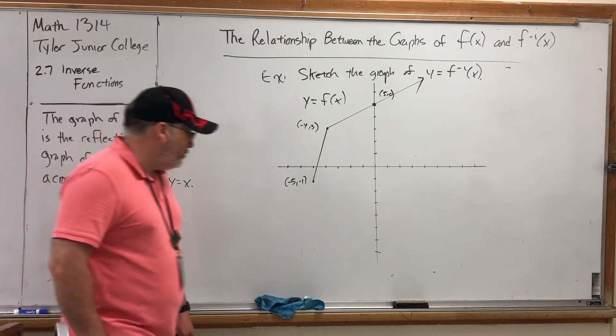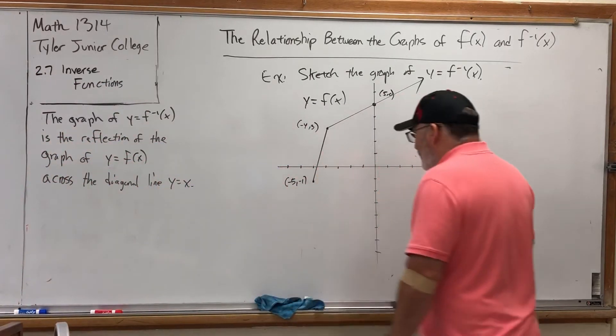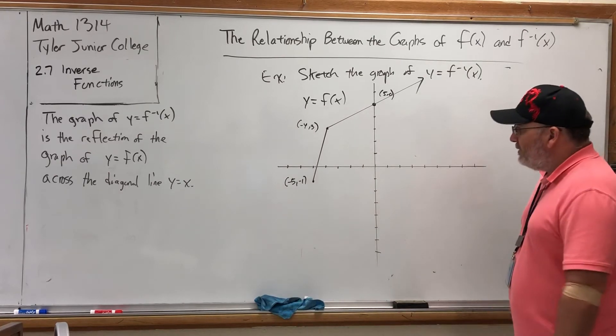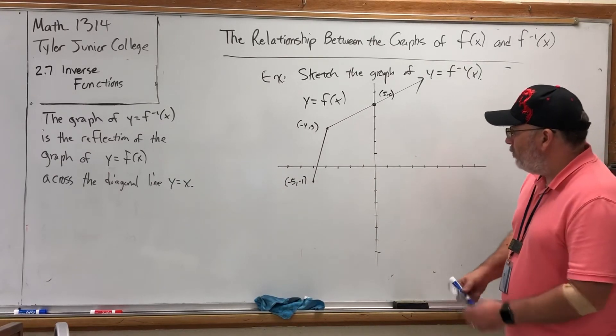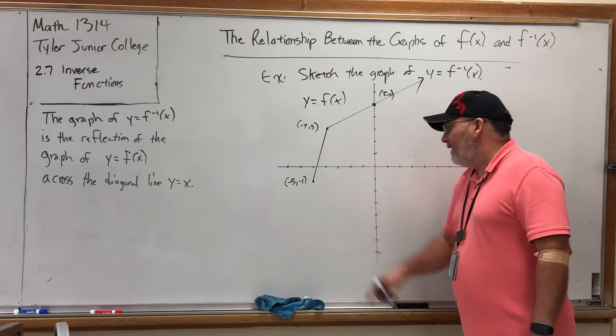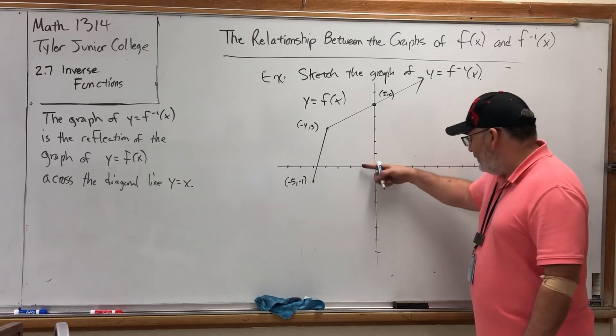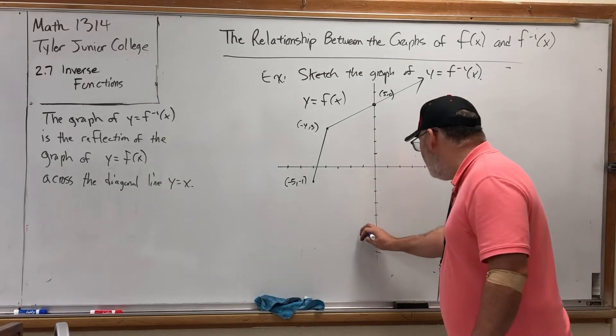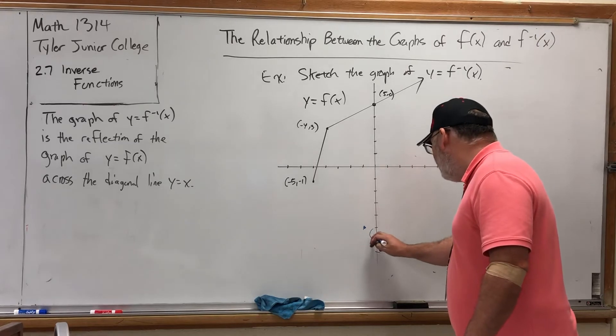We can make a piecewise function that does this. We just have to find the equation of this line, define it for x's between -5 and -4, then find the equation of this line and define it for all x's greater than or equal to -4. But if this is the graph of y equals f(x), first off it does pass the horizontal line test so it's invertible. So to find the graph of the inverse, we simply have to switch the ordered pairs and replot them. So instead of (-5,-1), we would want (-1,-5).